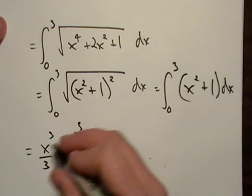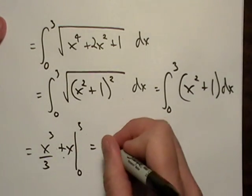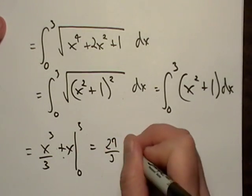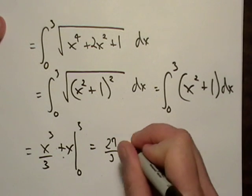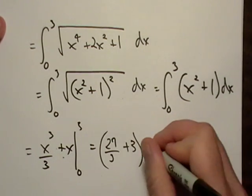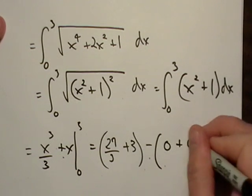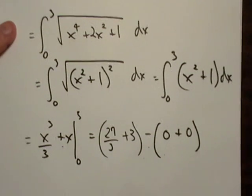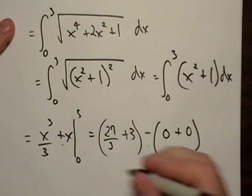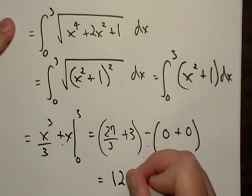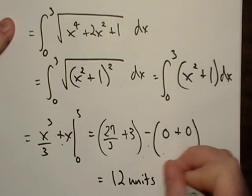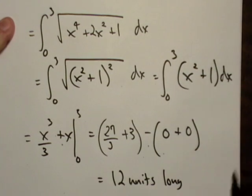So we'll have, we'll end up with what? Three cubed, which is 27 thirds minus or plus three. We're going to subtract that from, looks like zero plus zero. So that's nine plus three. So it looks like we equals 12 units long.